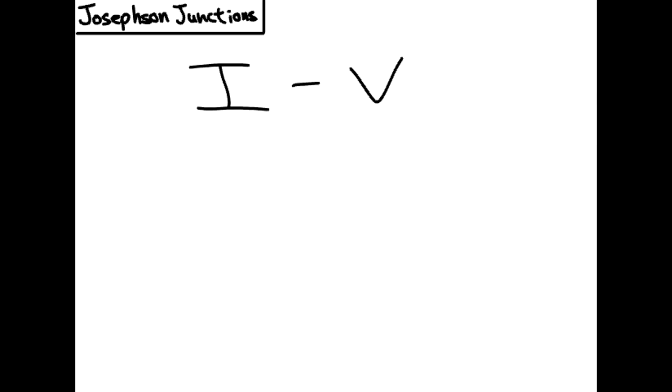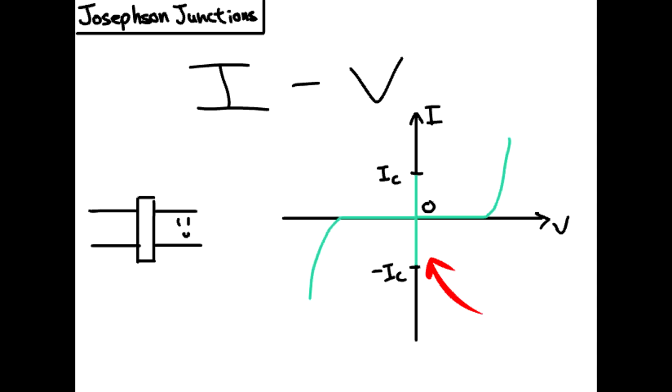The IV characteristics of a Josephson junction are rather interesting. There is a line at V equals zero representing the DC Josephson effect, while as you go further away, there are large values that the current takes on is due to the finiteness of the superconductor band gap.